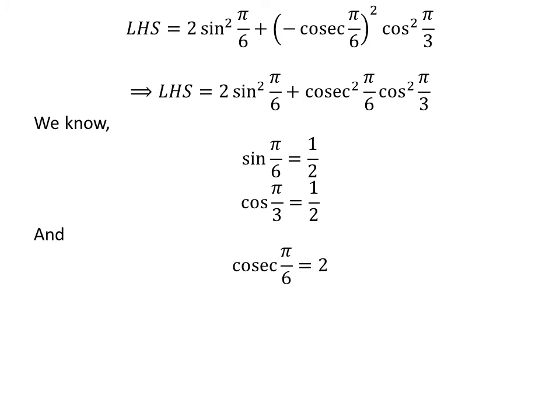We know the value of sine of pi upon 6 is half, the value of cosine of pi upon 3 is half, and the value of cosecant of pi upon 6 is 2. Plugging these values into the expression gives us the left-hand side equal to 2 times square of half plus square of 2 times square of half.